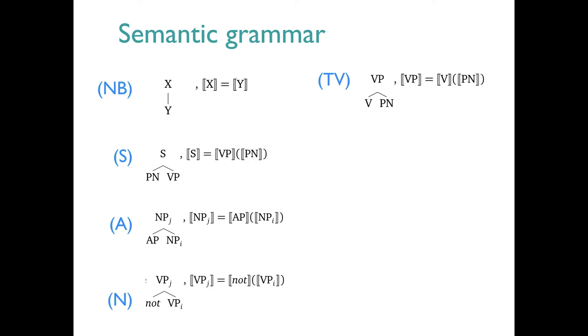Next up is rule TV. It too derives VP meanings. TV stands for transitive verb. The rule says that transitive verb meanings apply to their PN objects semantically. The result is a one-place predicate, just like both of the VP nodes in rule N.